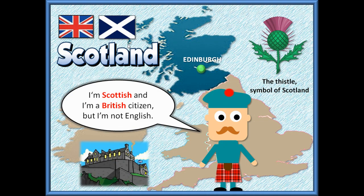The second country within the UK is Scotland. The capital of Scotland is Edinburgh. The symbol of Scotland is the thistle. This is the Scottish flag. People who live in Scotland are Scottish or British — they are not English. And this is a traditional Scottish costume; this is a Celt.